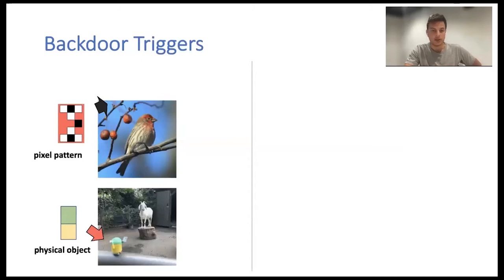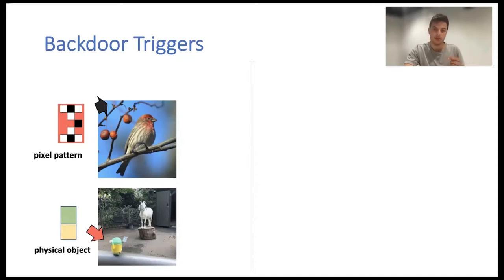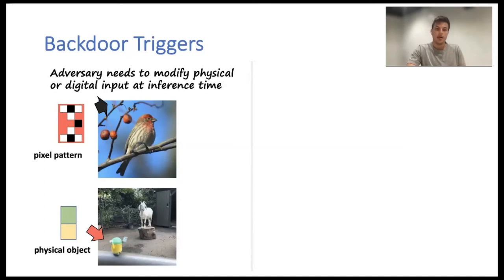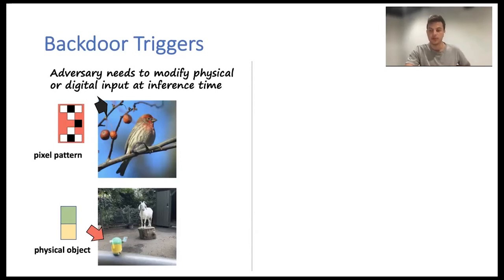You see that this is a completely different task. It's very different from adversarial examples — the backdoor can introduce completely new functionality into the model. Furthermore, the triggers can also be very different: it doesn't only need to be a pixel pattern, but it can be a physical object on the scene, like an Android toy. However, in both cases you still need to modify the input at inference time — put the toy there or modify the image.